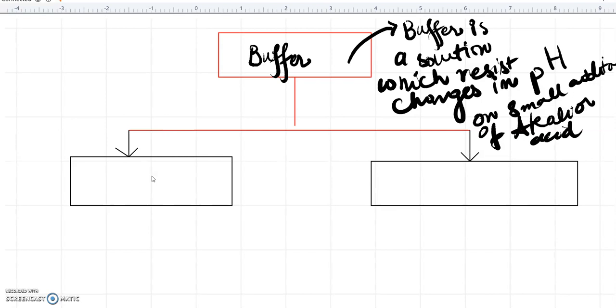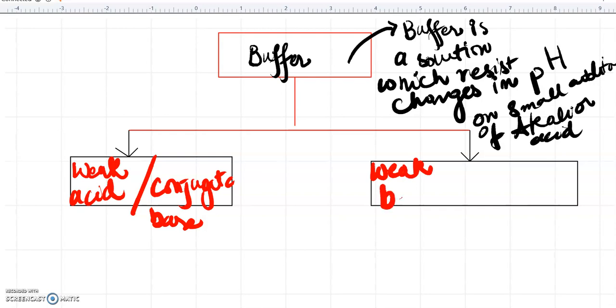Now, as you know that buffer is a solution. What type of solution is this? Basically, buffer is a solution of weak acid and its conjugate base, or there is another type of buffer: a weak base and its conjugate acid.